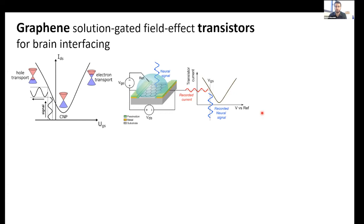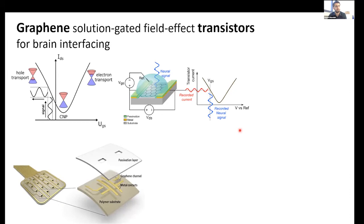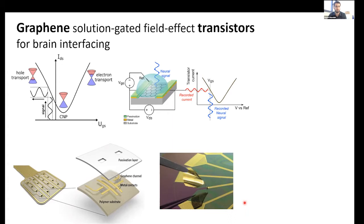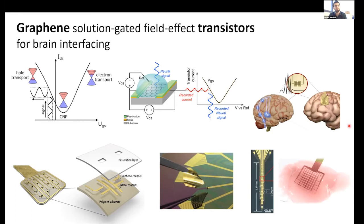Therefore, we can use graphene in what is called solution-gated field effect transistors, in which graphene forms the channel of a transistor and is in direct contact with the electrolyte. Neural signals in close vicinity to a transistor are converted into current modulations. We have spent several efforts developing flexible microelectrode arrays of graphene transistors in a microelectronics-compatible way. Our current process uses polyimide as a substrate, metals are defined by liftoff, graphene is transferred and patterned, and then we encapsulate the devices with a photo-definable layer, all done at wafer scale.